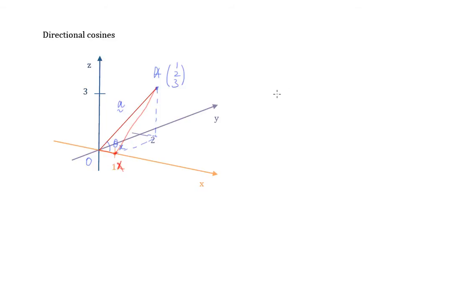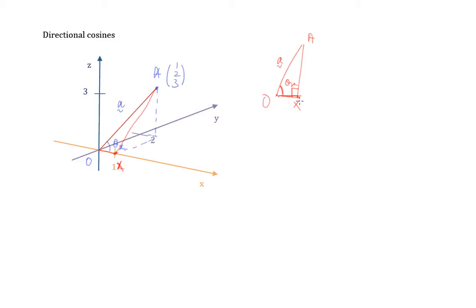In a two-dimensional view, this is how the right-angle triangle looks like. It's a right-angle triangle, this is my X, and this is the point A. To find this angle — which, by the way, will be theta x, because it is the angle that OA, the vector A, makes with the x-axis — bear in mind that OX is part of the x-axis, which is one unit. So now, how do we find this angle? Well, using this setup, you start to realize that it's not that difficult using basic trigonometry.